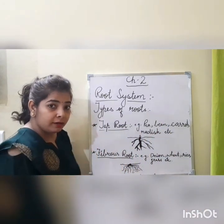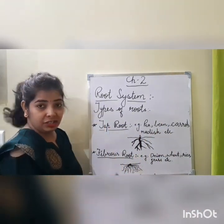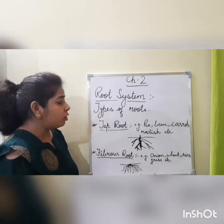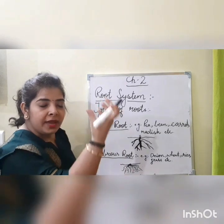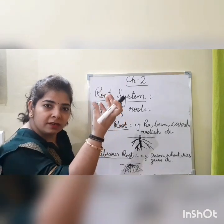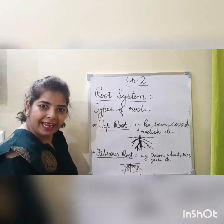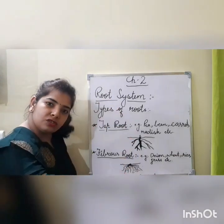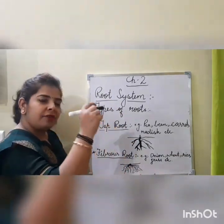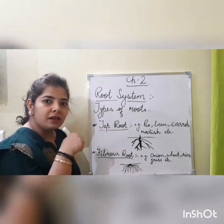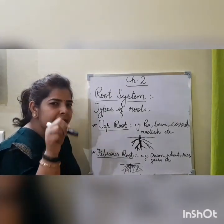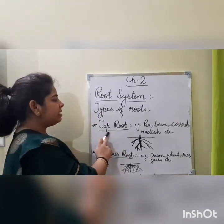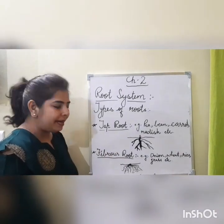Did you know carrot is a root? Radish is also a root. If you observe, the root is straight and goes straight down into the ground, and from it you will find some thinner roots coming out. That is tap root.